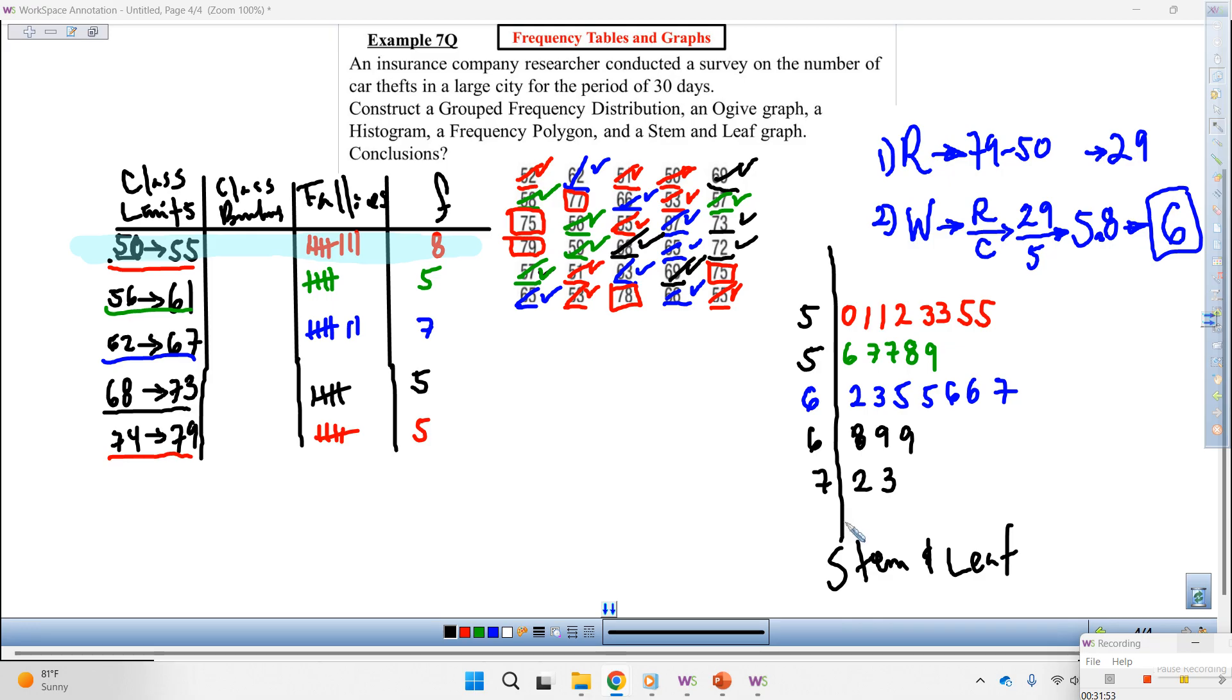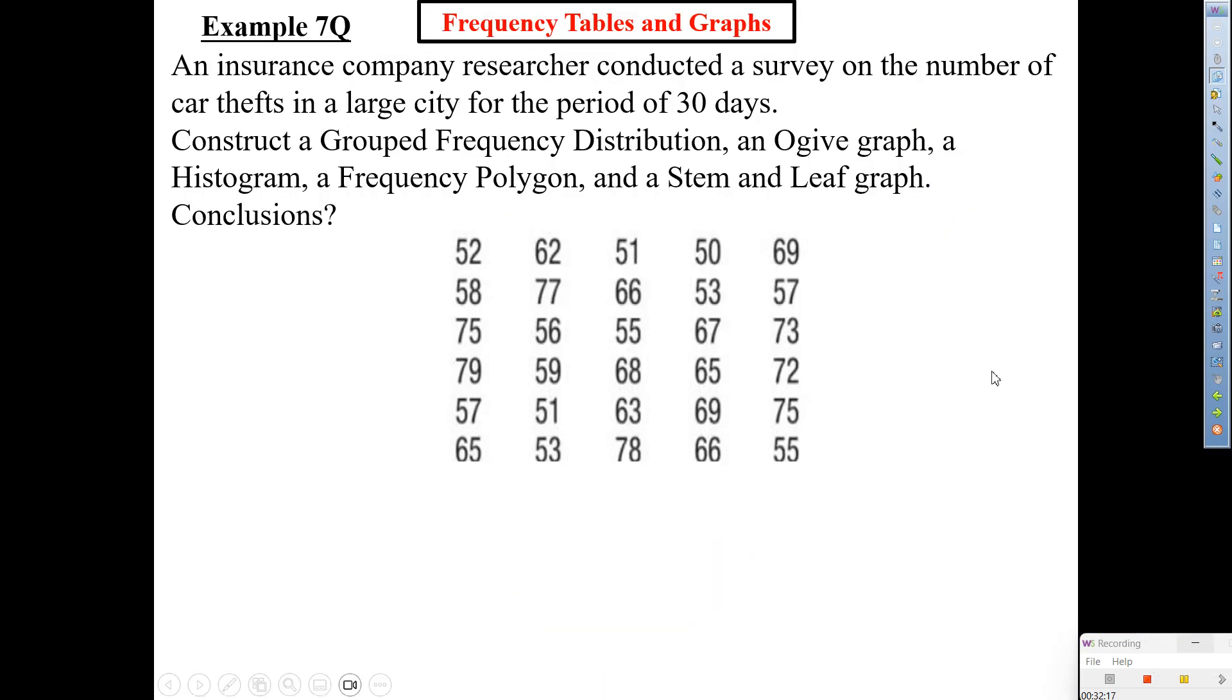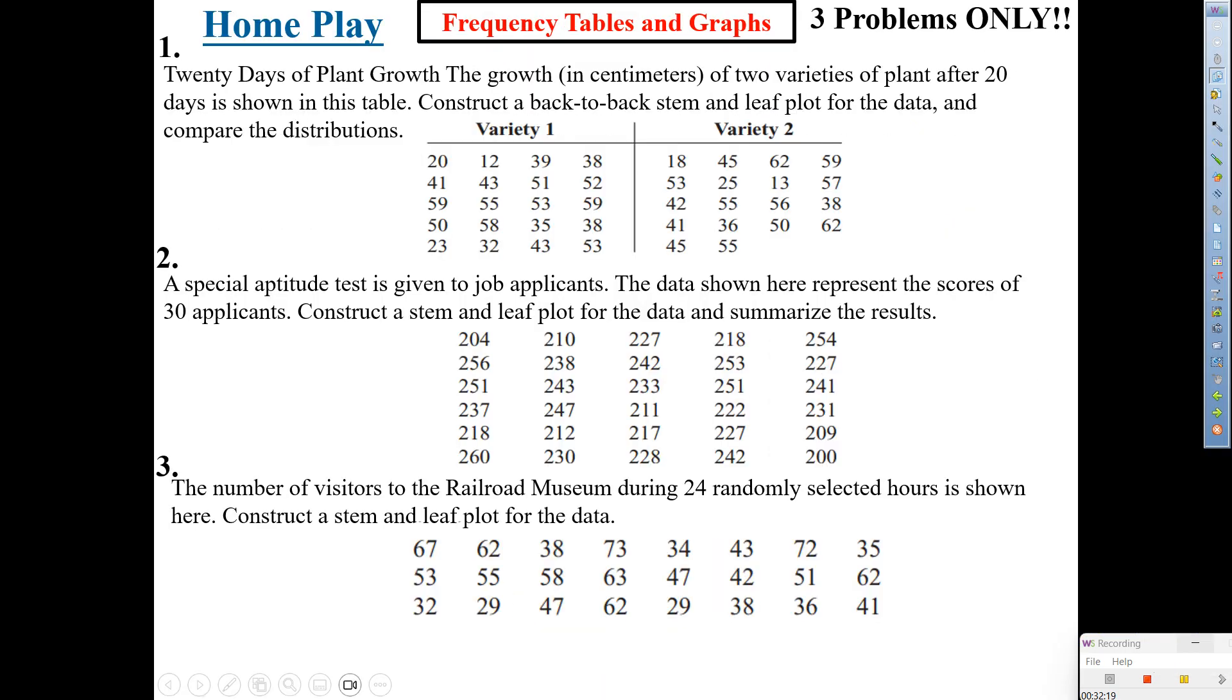All right. So it looks like we got the whole process of getting our class limits, class boundaries. You fill that in, tallies, frequency, and then getting our stem and leaf. And you know how to do the histogram, frequency, polygon, and the ogive. So for tonight, once again, look up. Here's the home plate.